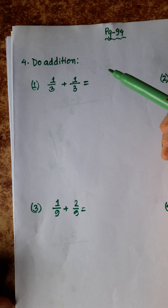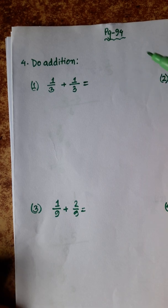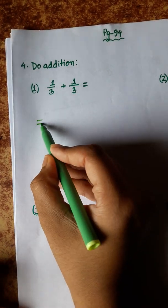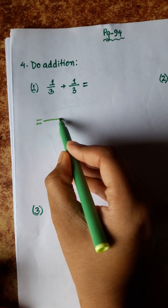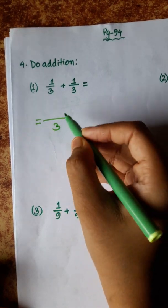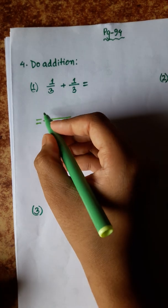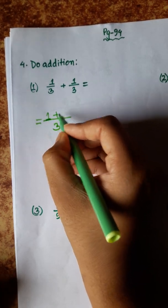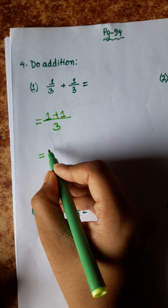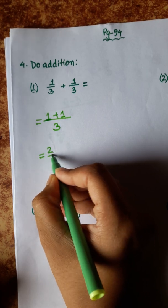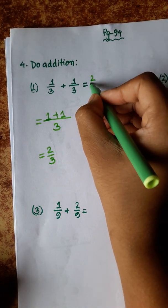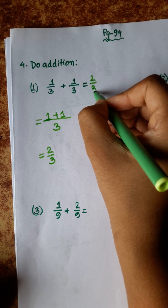When the denominator is the same, we add the numerators. So 1 plus 1 gives us 2 by 3. The answer is 2 by 3.